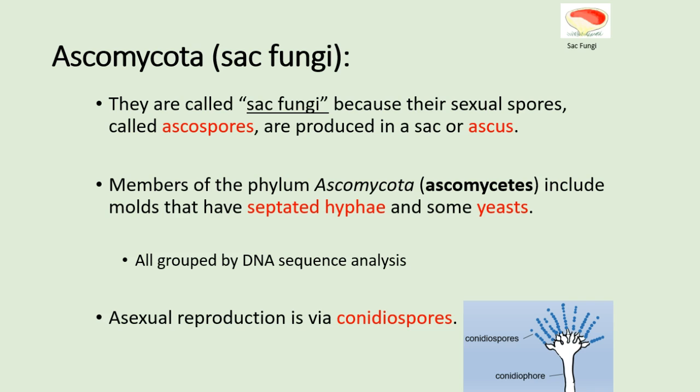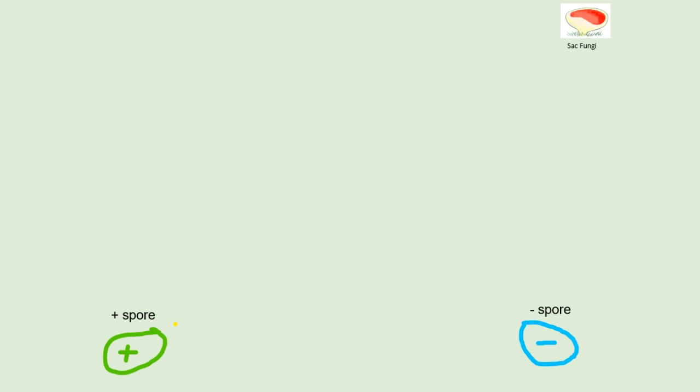Now let's talk about the life cycle of a typical multicellular Ascomycete. Peziza is typically used as an example. We'll start with two spores of different mating types, called plus spore and minus spore. During optimal conditions, both spores germinate and form branched septated hyphae. Both hyphae are made out of cells that contain single haploid nuclei — haploid meaning they contain one copy of every chromosome. For example, Saccharomyces cerevisiae has 16 different chromosomes, Penicillium has four chromosomes, and Peziza, depending on the species, can have between 8 and 16 chromosomes.